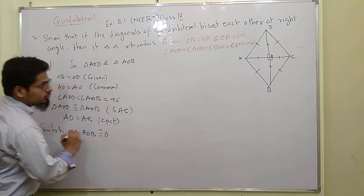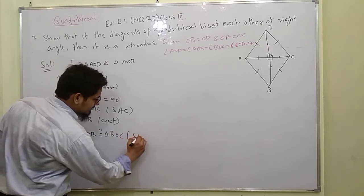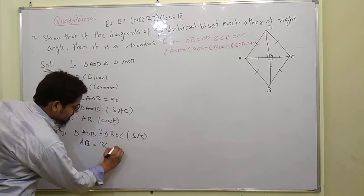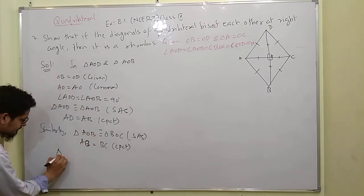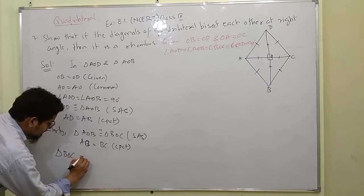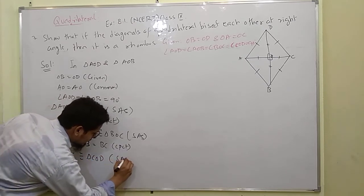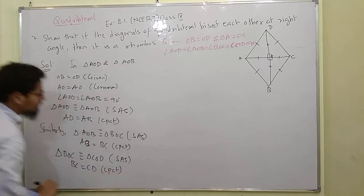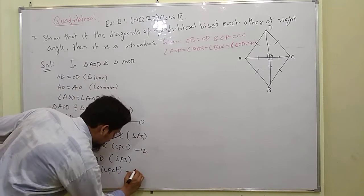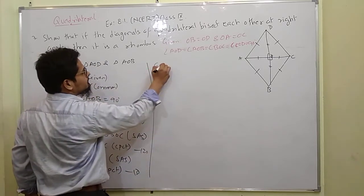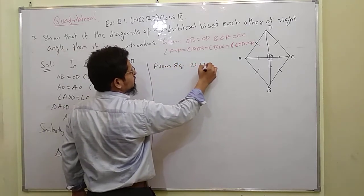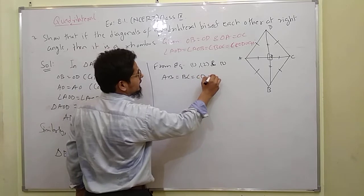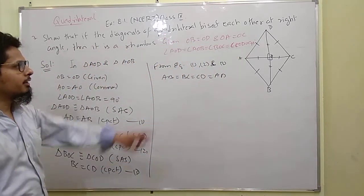Triangle AOB is congruent to triangle BOC by side-angle-side, and by CPCT, AB is equal to BC. Third, triangle BOC and COD — by side-angle-side and by CPCT, BC is equal to CD. From equations 1, 2, and 3 we can say AB is equal to BC is equal to CD is equal to AD. All four sides are becoming equal.